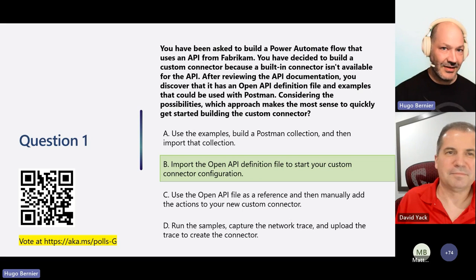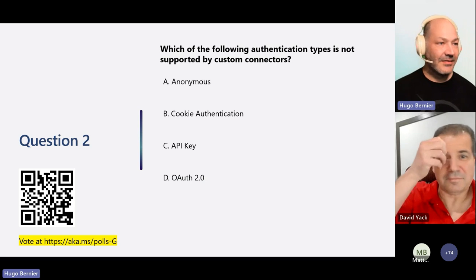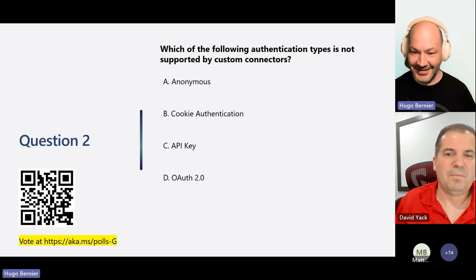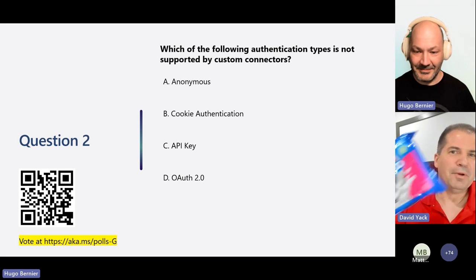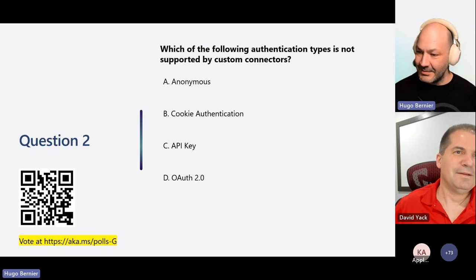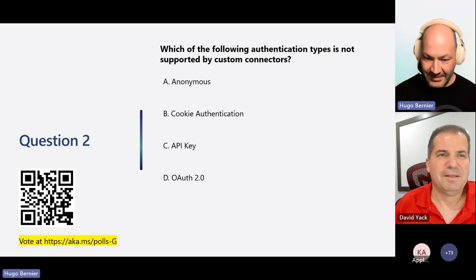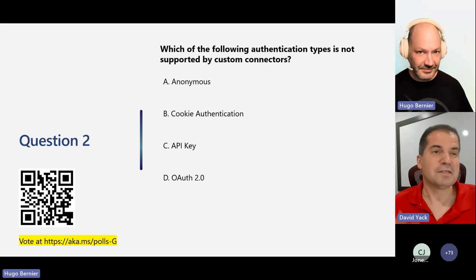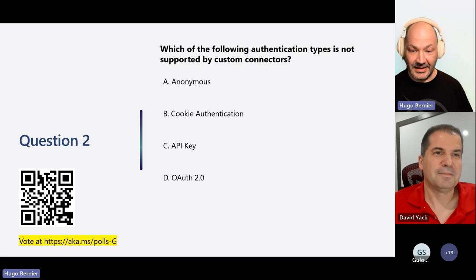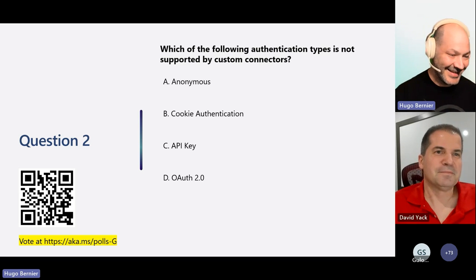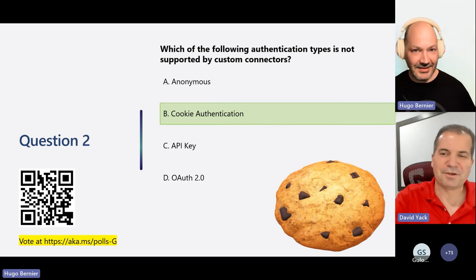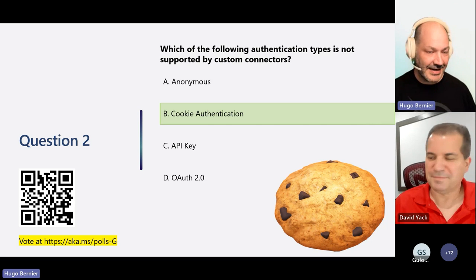Next question: which of the following authentication types is not supported by custom connectors? The answer is B — cookies. Cookie affinity is not a supported authentication type. The supported ones are No Authentication, Basic Authentication, OAuth 2, and API key.